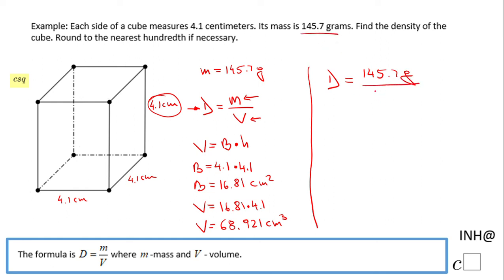145.7 divided by 68.921, and we end up with 2.114. We need to round it to the nearest hundredth, so we get 2.11 grams per cubic centimeter.